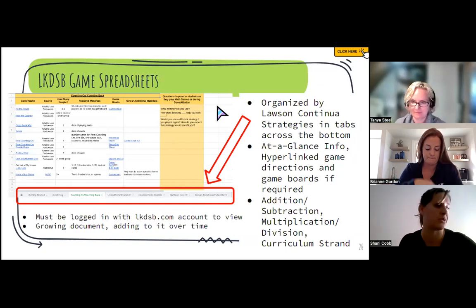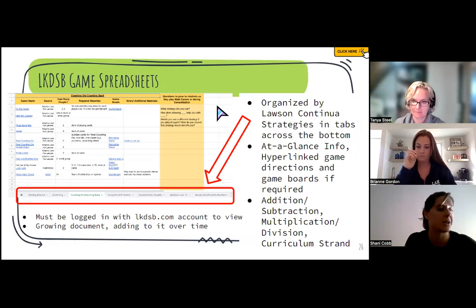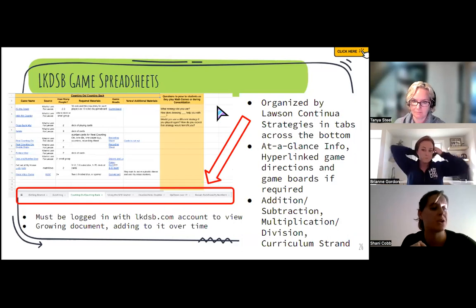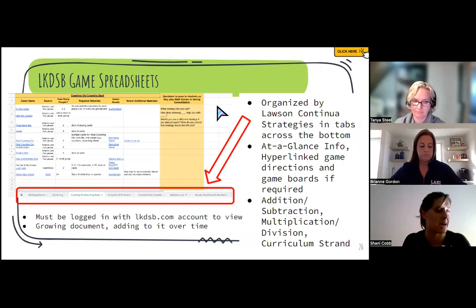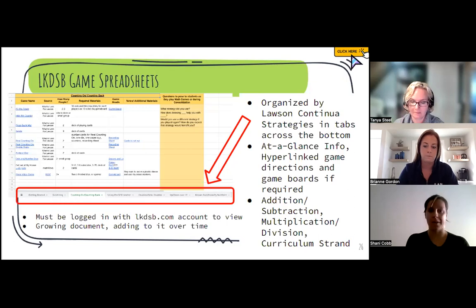To support further with the games, we've got the two spreadsheets for addition and subtraction and the multiplication and division of the Lawson strategies. Using the tabs along the bottom to navigate these strategies, you will find a page with multiple games organized for you with all the Blackline Masters, instructions, and links that you will need to facilitate these for your students. Remember, this is a growing document. It will be added to over time. You must be logged into your lkdsb.com account to view it. The links are in that click here at the top of the page.